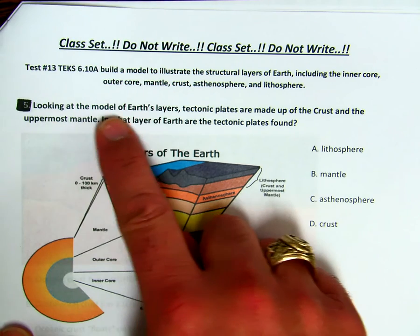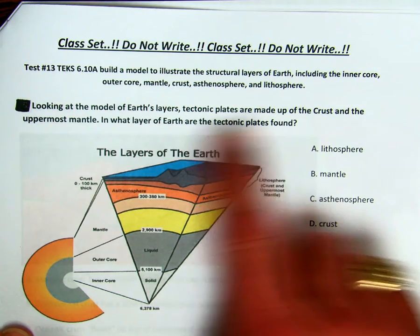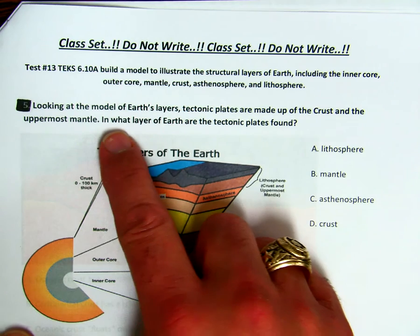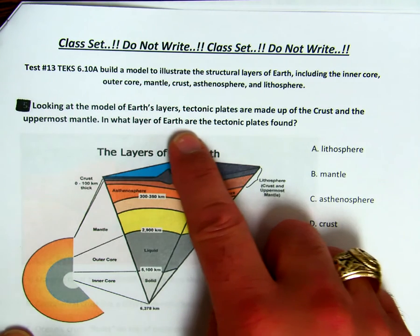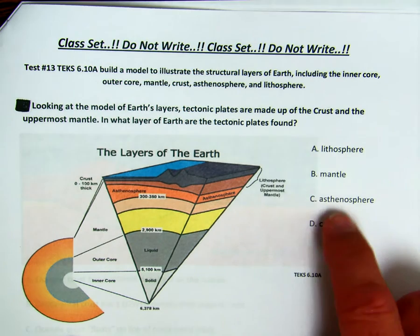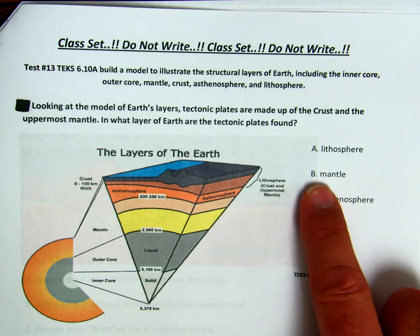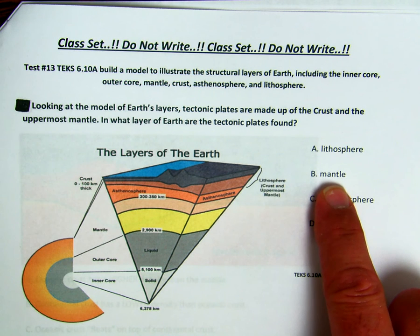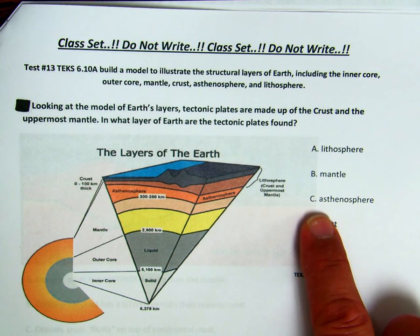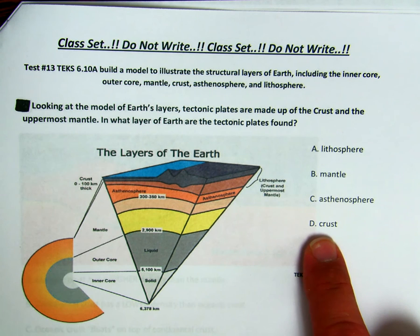Looking at the model of Earth's layers, tectonic plates are made up of the crust and the uppermost mantle. In what layer of Earth are tectonic plates found? Is it A, in the lithosphere? B, in the mantle? C, in the asthenosphere? Or D, in the crust?